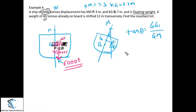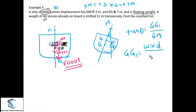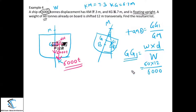GG1 is the movement generated due to the weight shifting toward starboard: GG1 = (w × d) / W = (60 × 12) / 6000. Now for GM: since the cargo is shifted only horizontally, there is no change in vertical center of gravity. So GM = KM − KG = 7.3 − 6.7.